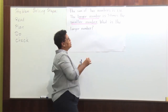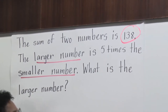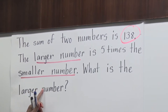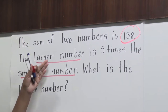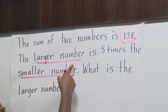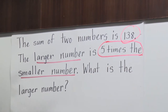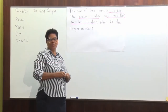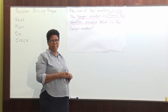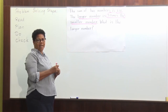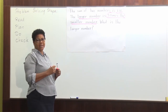We also have the whole, which is 138. So we have identified our whole and our shares. What's the difference between this share and that share? The difference is that this share is five times the smaller number. So how are we going to solve this? We're going to use this strategy: draw a diagram. I am going to use 'larger number' and 'smaller number' as names in my diagram.